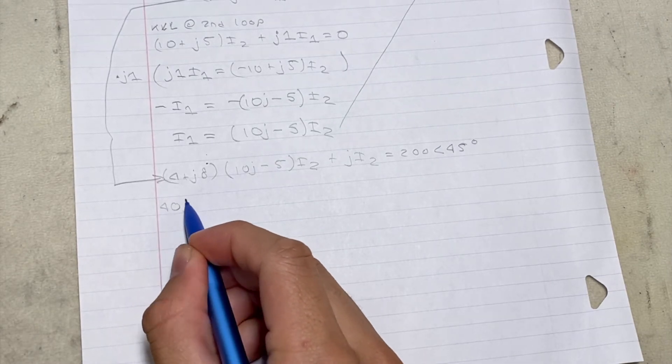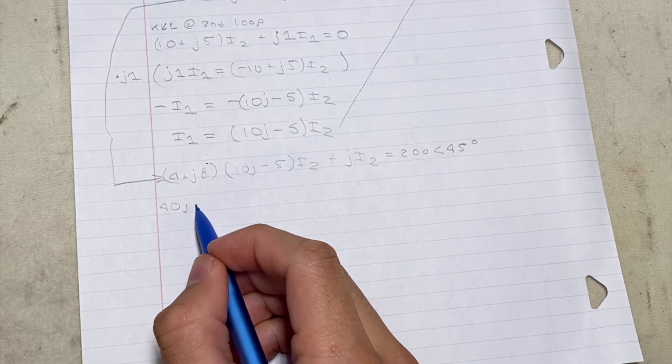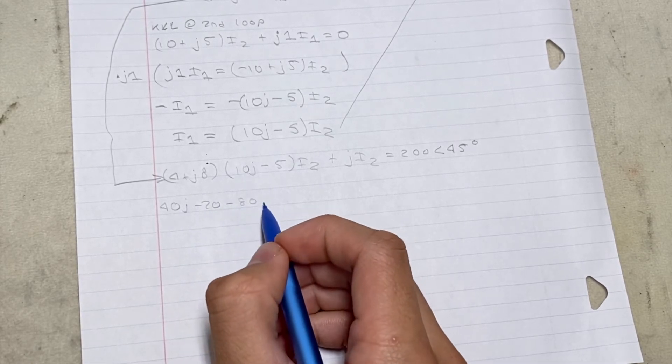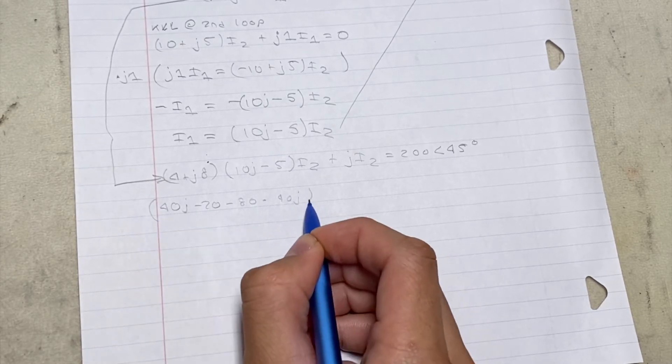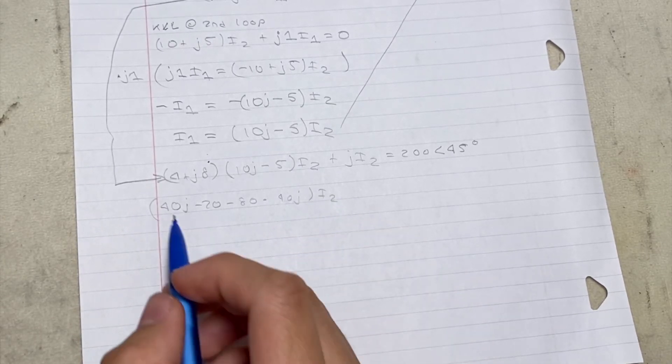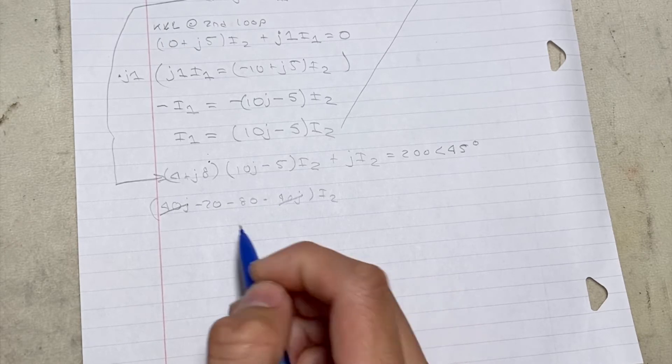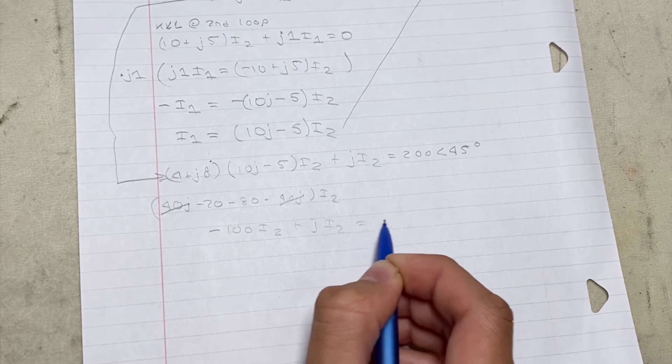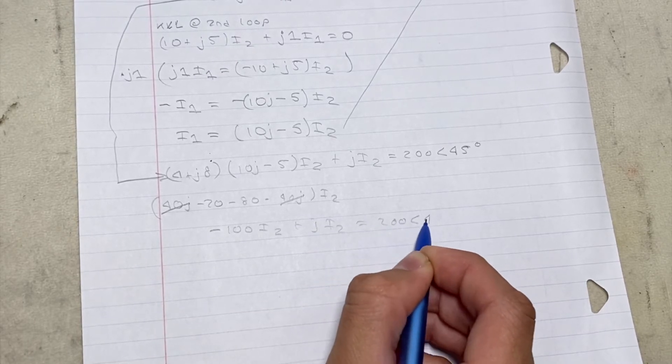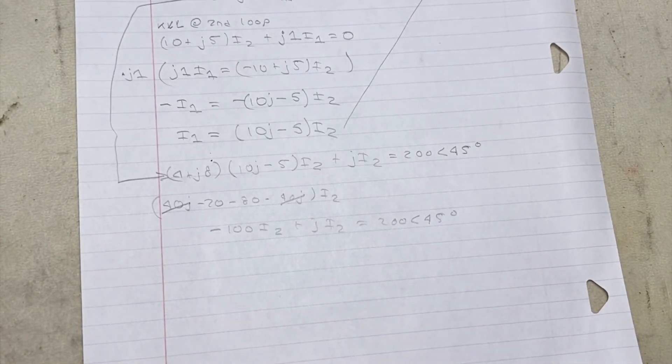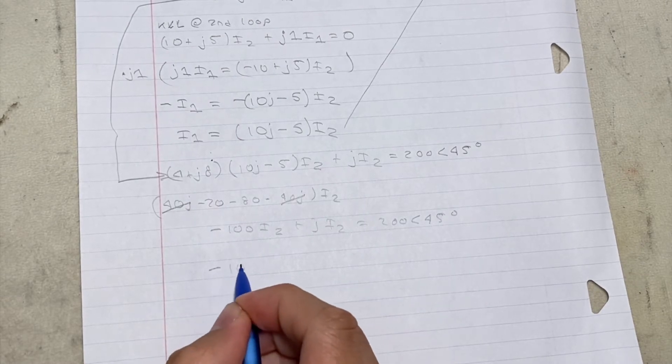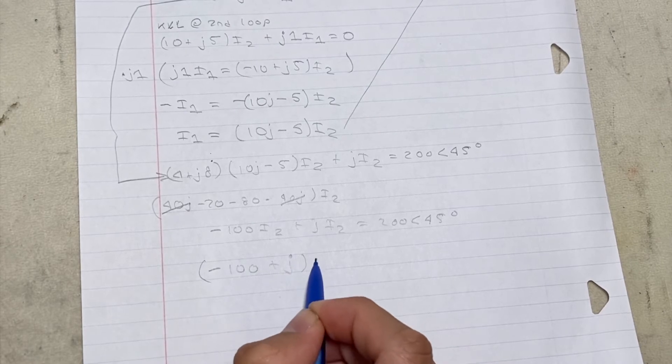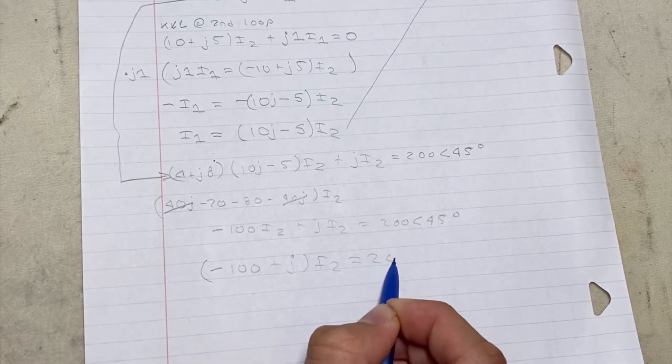Now we can expand this by writing (40J - 20 - 80 - 40J) all times I2. Now we can see here that the 40Js are going to cancel and we can combine negative 20 and 80 to get negative 100 times I2 plus J of I2 is equal to 200 angle 45. I'm going to rewrite it and it's going to show the rectangular form (-100 + J) all times I2 is equal to 200 angle 45.